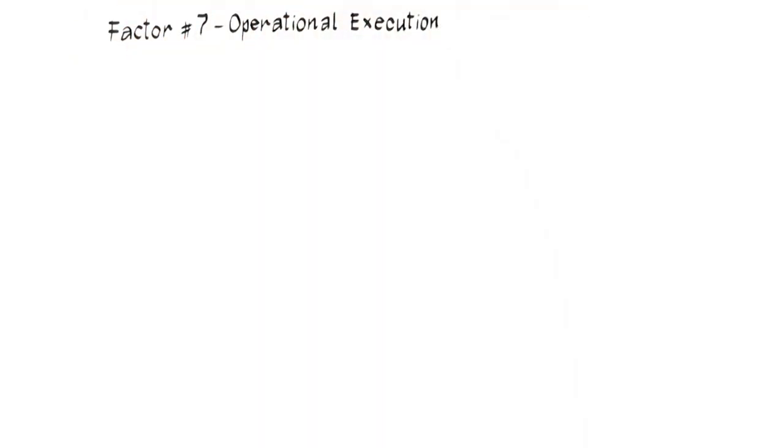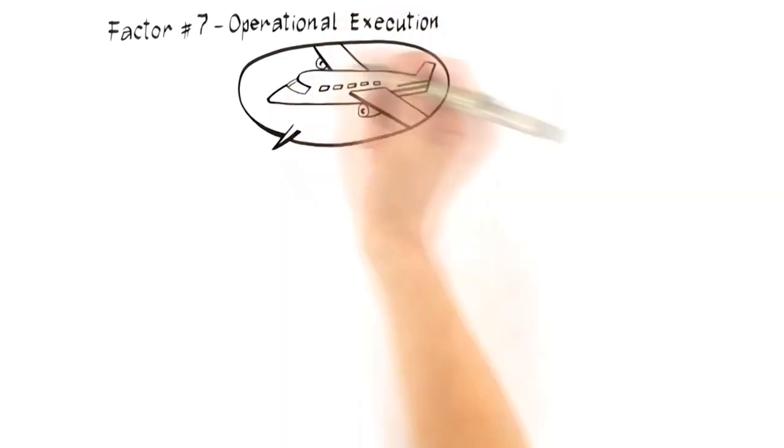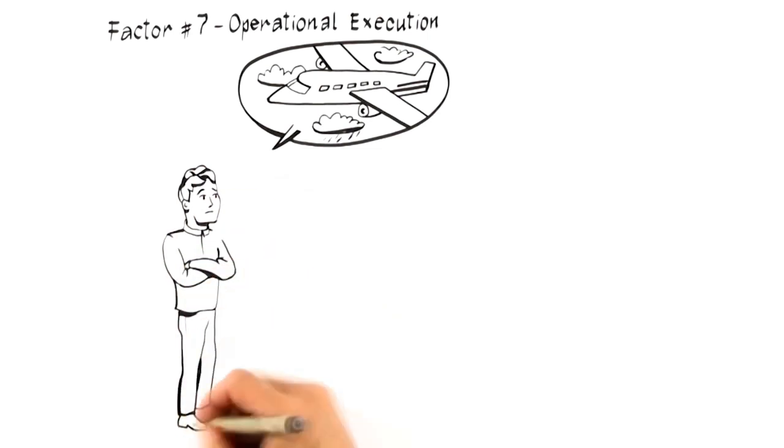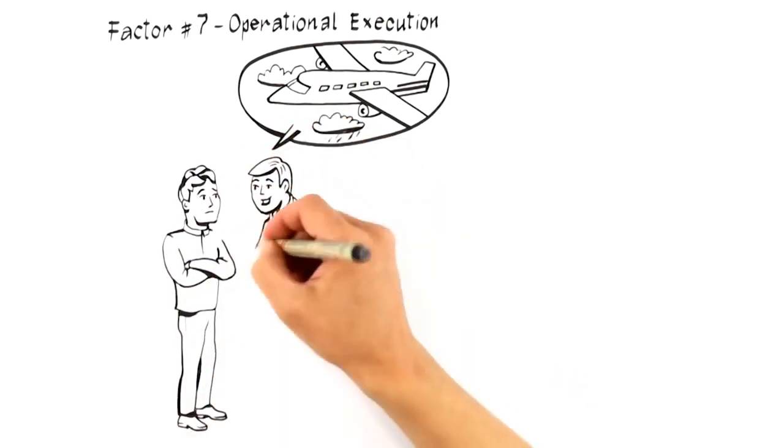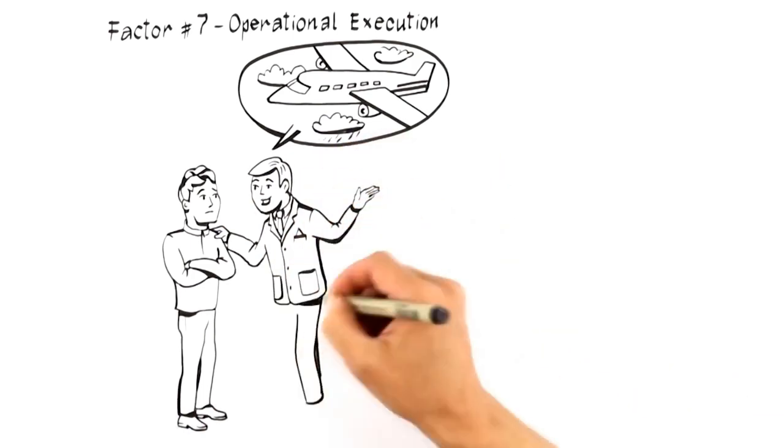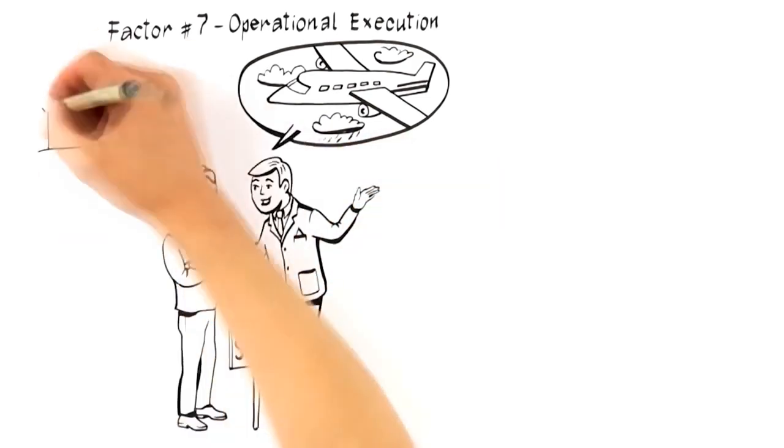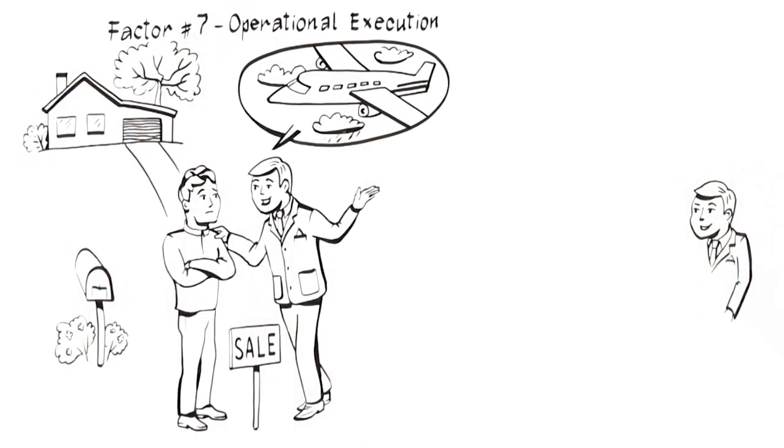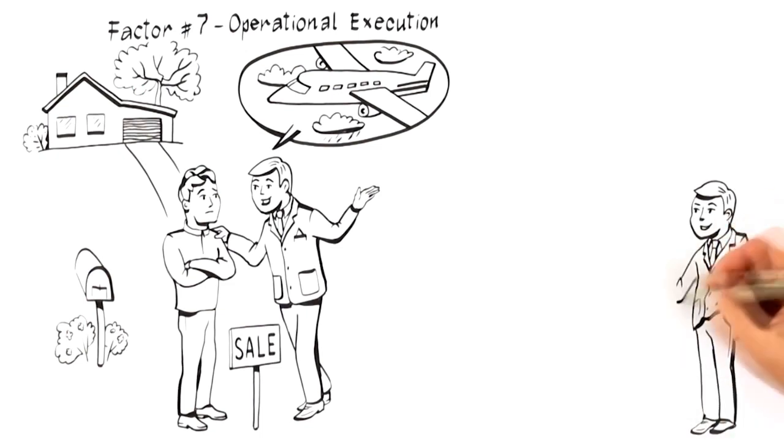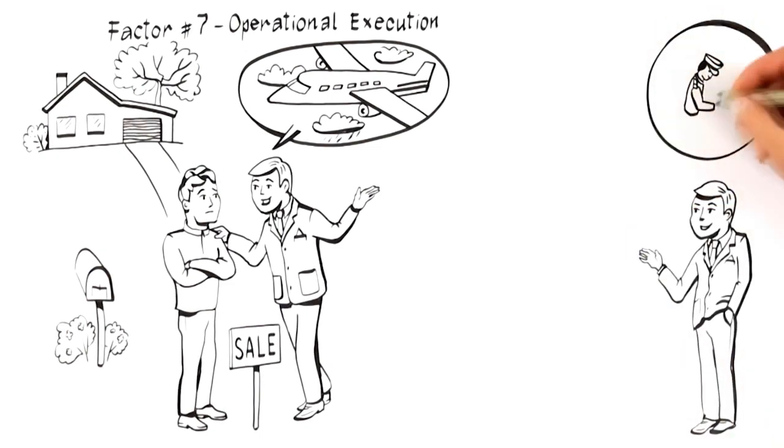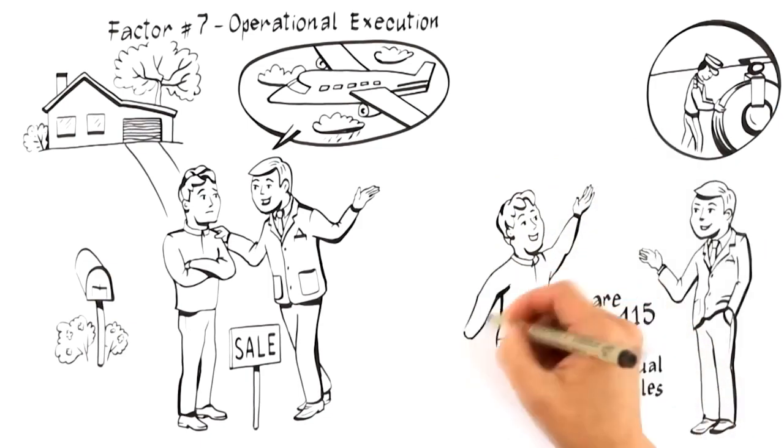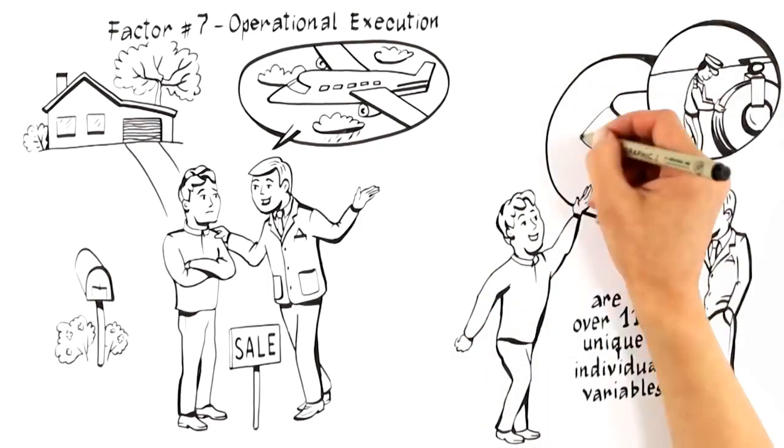The last factor that brings everything together is factor number seven, operational execution. The sale of your home is much like flying in an airplane. You want an expert in the cockpit who's flown hundreds of times and follows a set of documented processes to get your plane safely into the air and back on the ground again. You would never want your pilot to be the person who is checking the air in the tires, fueling the plane, washing the windows, or serving drinks up and down the aisle. And because there are over 115 unique individual variables that go into the successful sale of every home, you don't want an agent who doesn't have systems and relationships in place to manage the process.